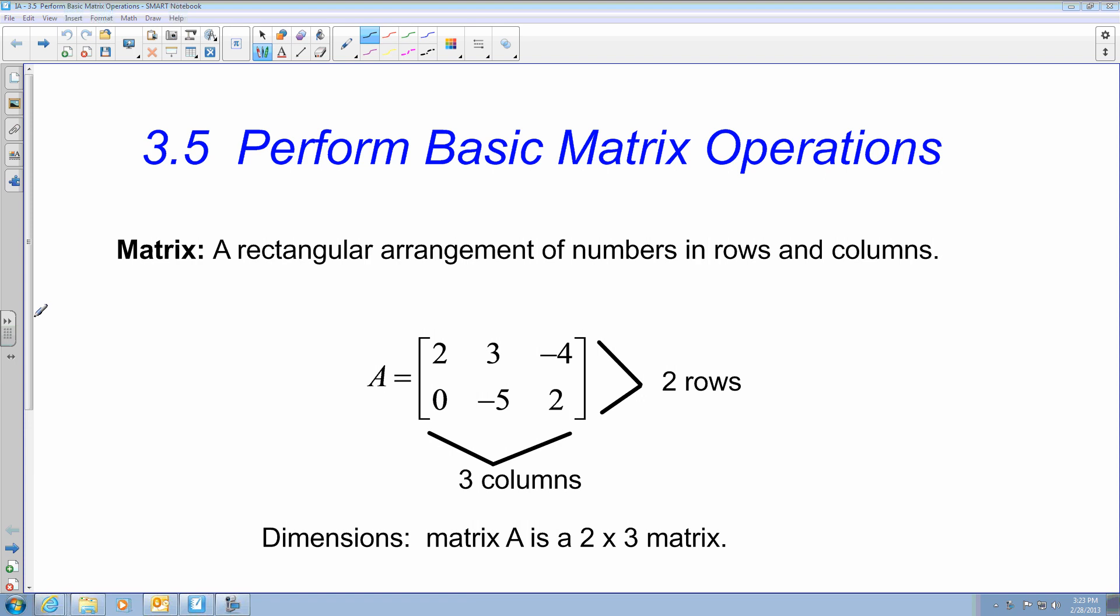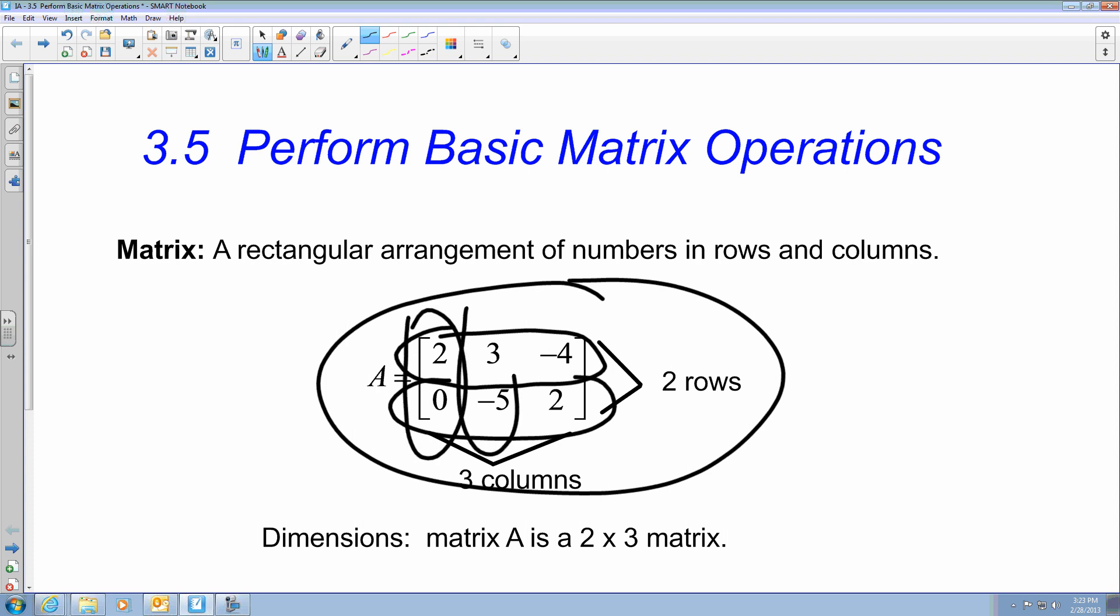First thing we have to do is, what is a matrix? A matrix is a rectangular arrangement of numbers in rows and columns. Not only can it be numbers, but it also could be variables, symbols, and stuff like that. But here's the main thing: this is what a matrix looks like. And again, we said it was broken up into rows and columns. So this here is considered a row, and this here is considered a column. So when they tell you like matrix A is a 2-3 matrix, that's telling us that the dimensions for that matrix is two rows and three columns.